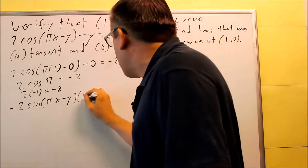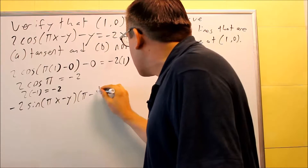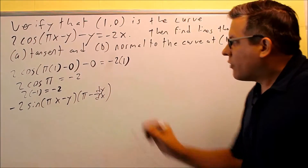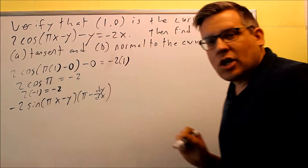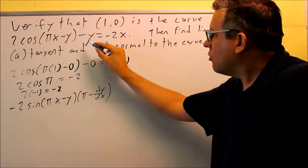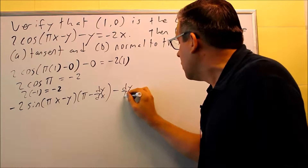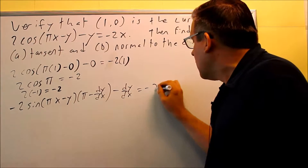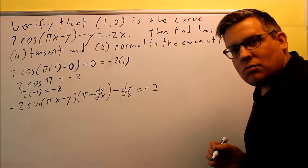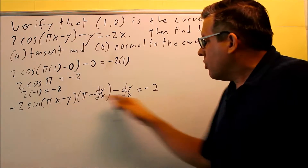The derivative of the inside: the derivative of pi x is just pi, and then I have a y by itself, that's going to turn into dy/dx. Whenever you have a y by itself, it's dy/dx. In fact, you have that here too because there's another single y, so we get another dy/dx here, and the derivative of negative 2x is just negative 2.